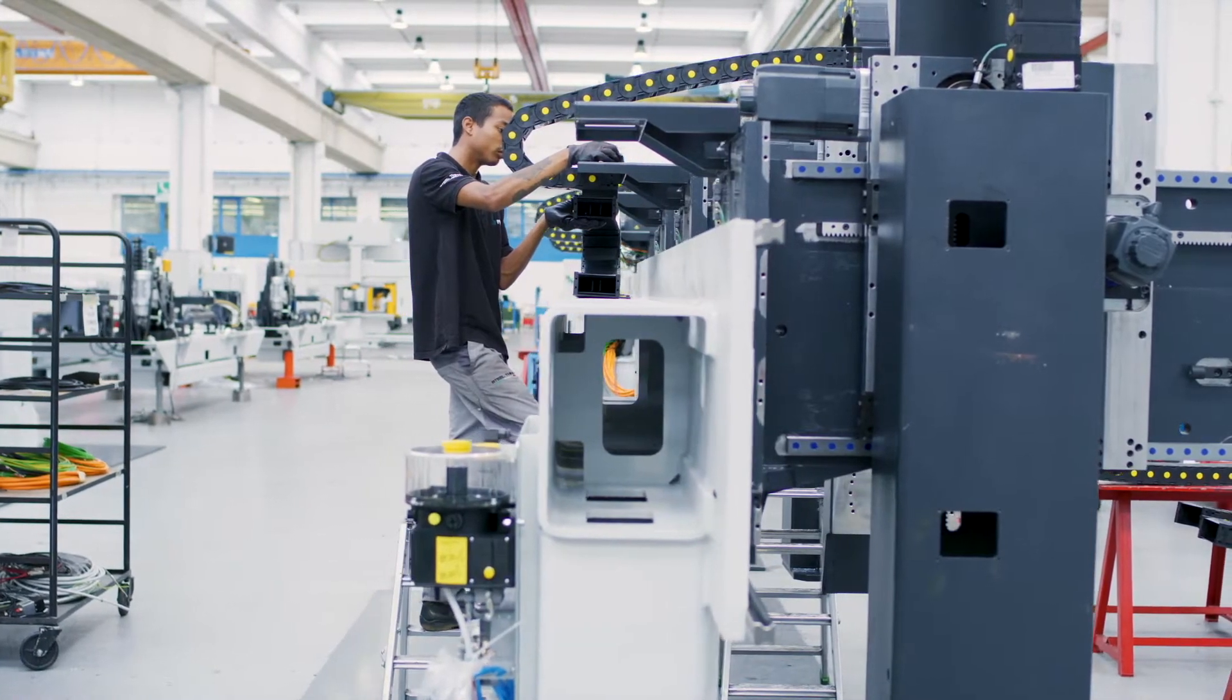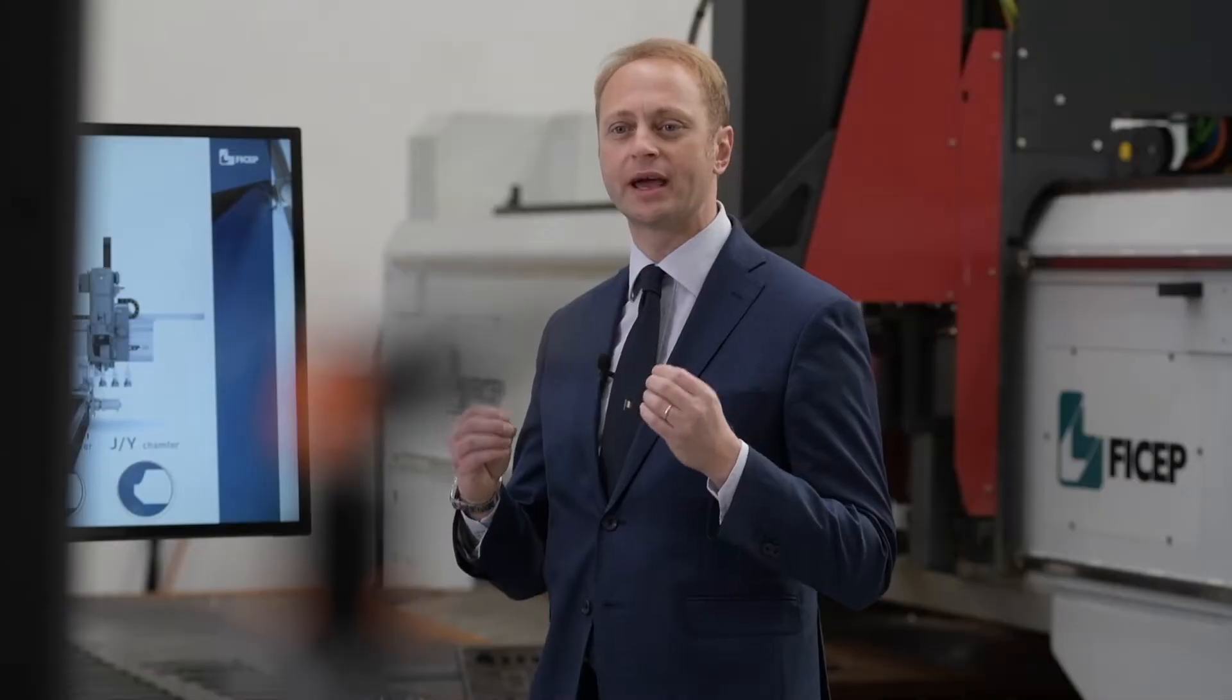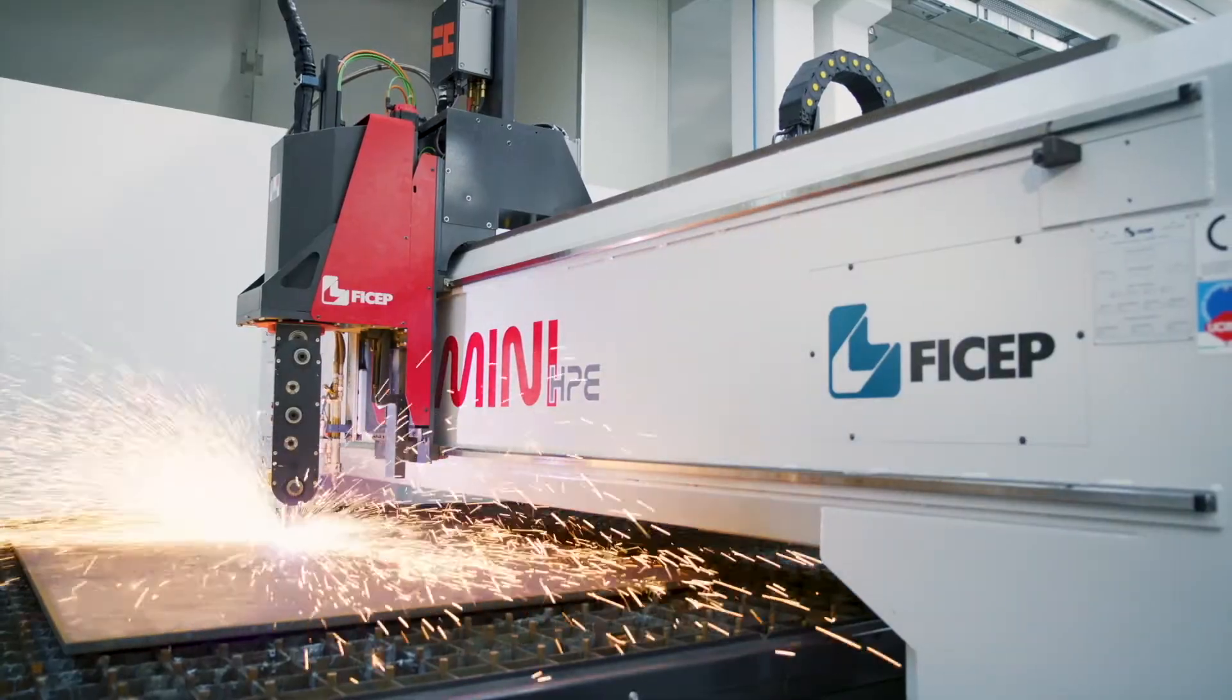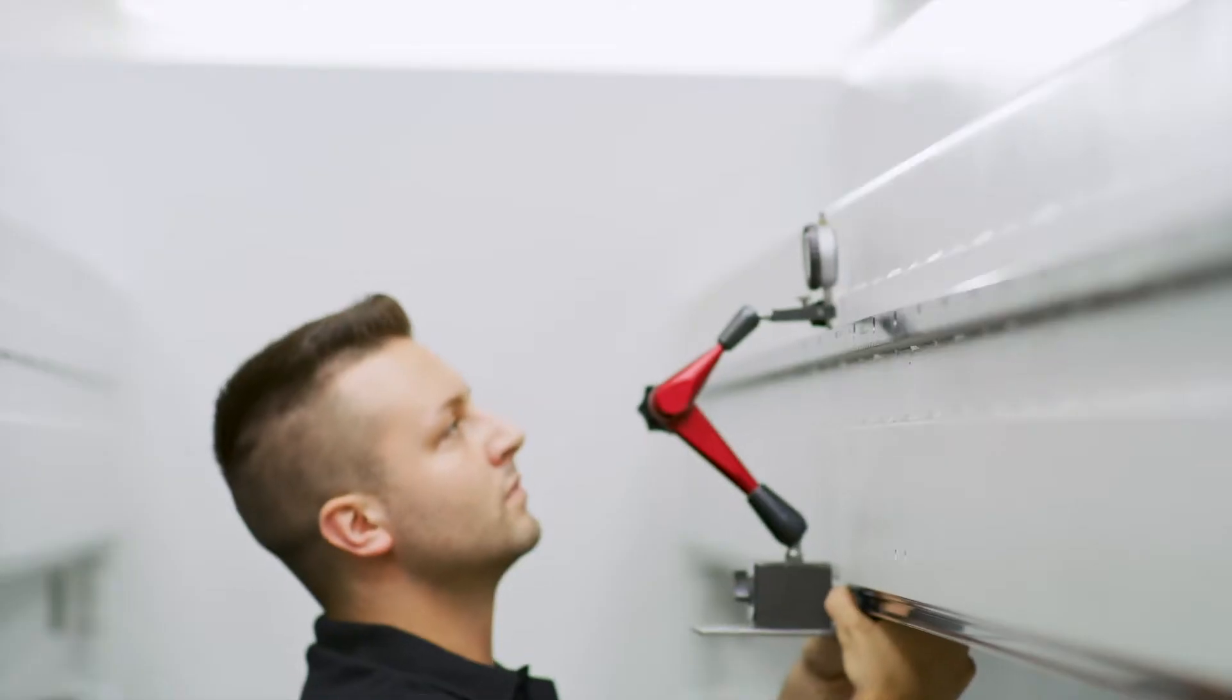Today we can count on more than 145,000 square meters in which we carry out the integrated production of our products, such as designing, engineering, mechanical processing, surface treatment and assembly.